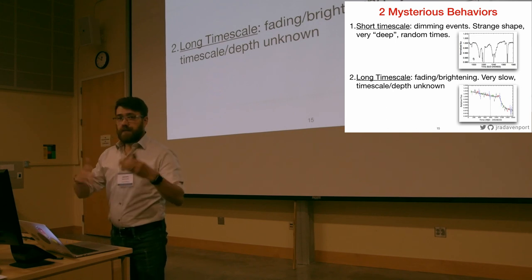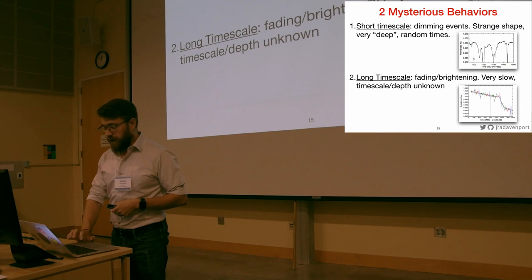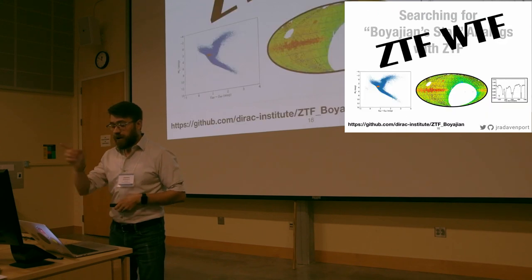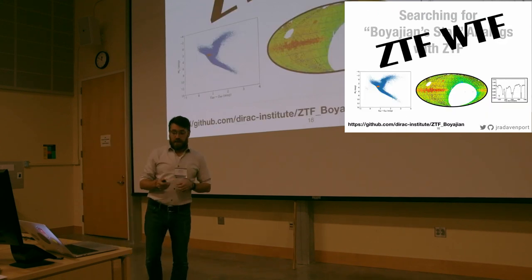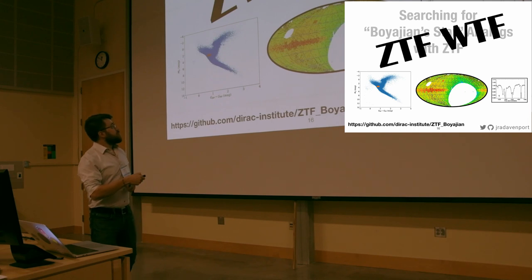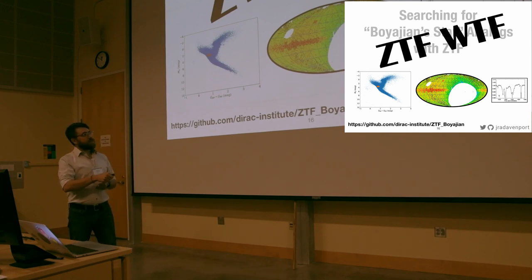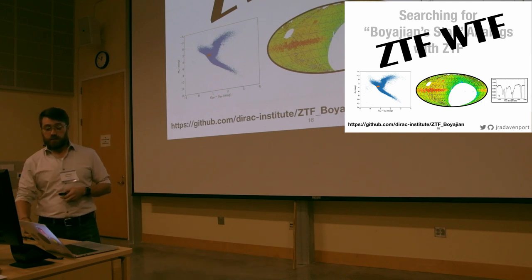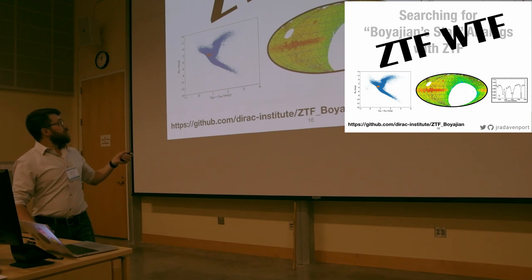So the goal, like many of the projects we've talked about here, we haven't done anything yet, but we've started working on this for ZTF WTF, is to use ZTF to look for other examples of this class. Now Boyajian Star at 11th magnitude is a little too bright to play this game with, or to do continued monitoring really with ZTF. But there's a lot of sky out there, not just the Kepler footprint, but a lot of sky that we could monitor.